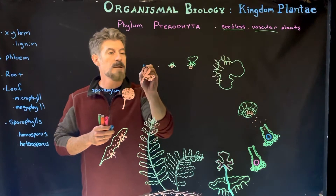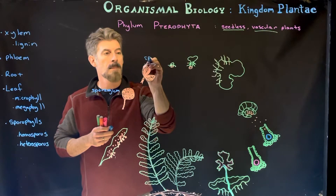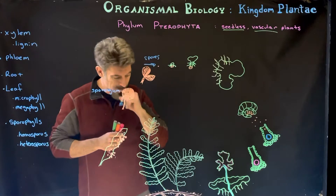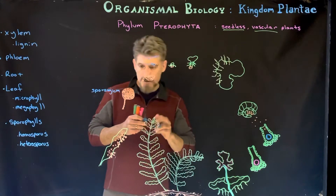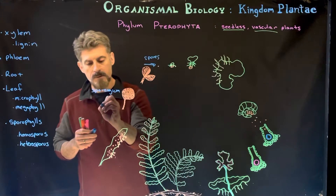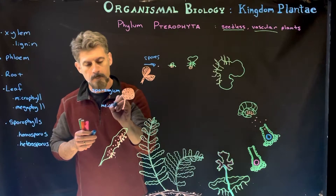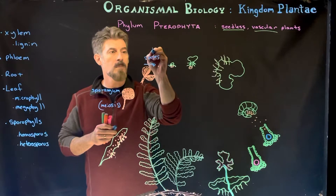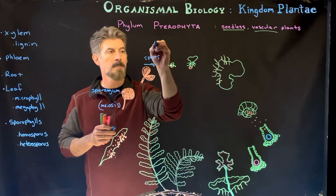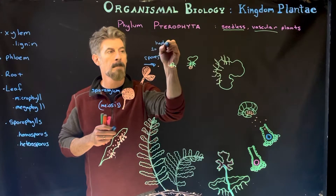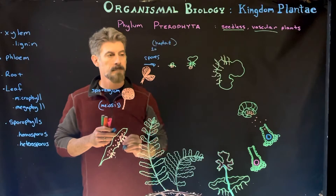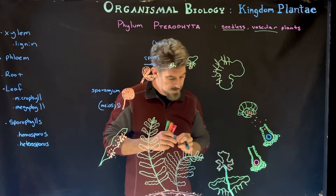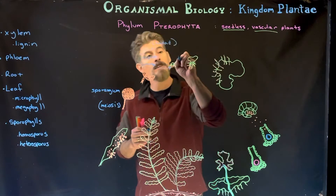...which is then going to release our spores. Remember, inside the sporangium is where we have meiosis, producing the spores, which are 1n or haploid. A spore then goes on and starts to develop into the new gametophyte.